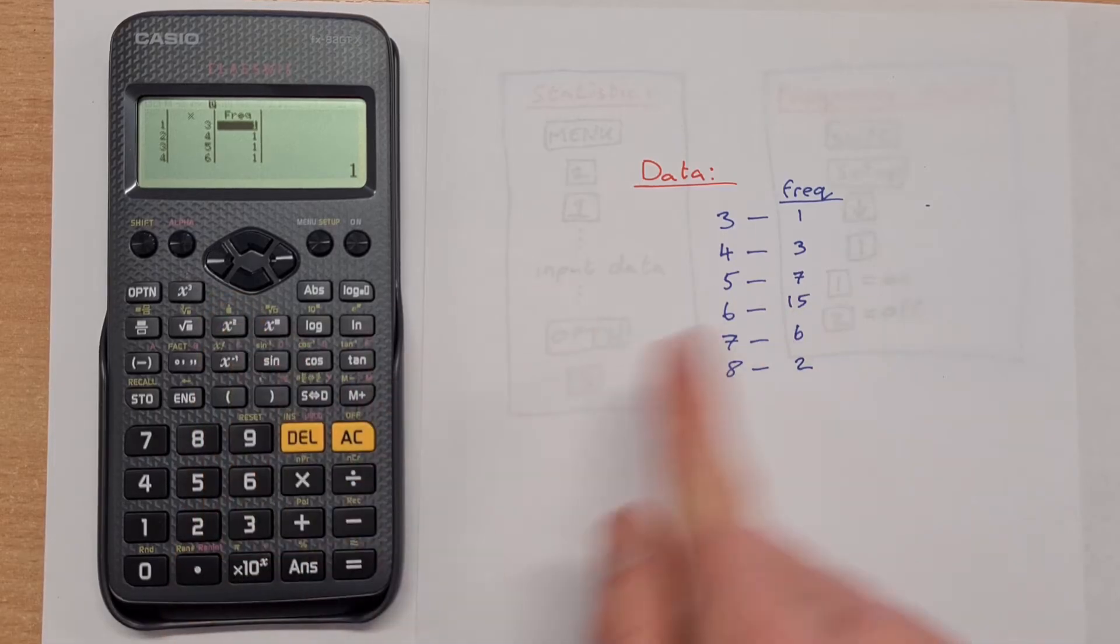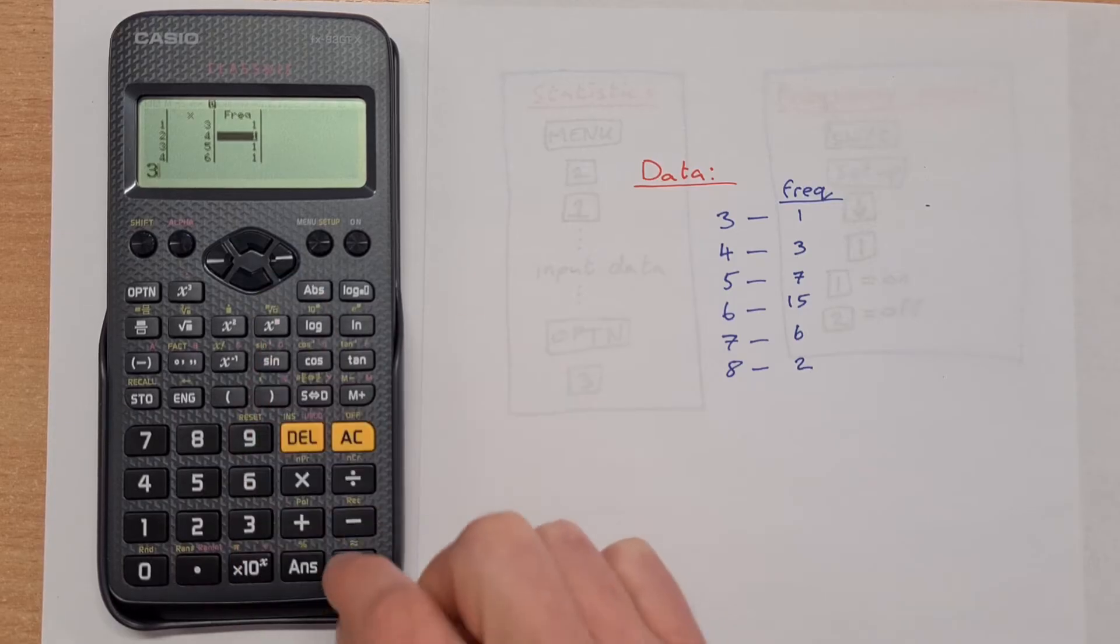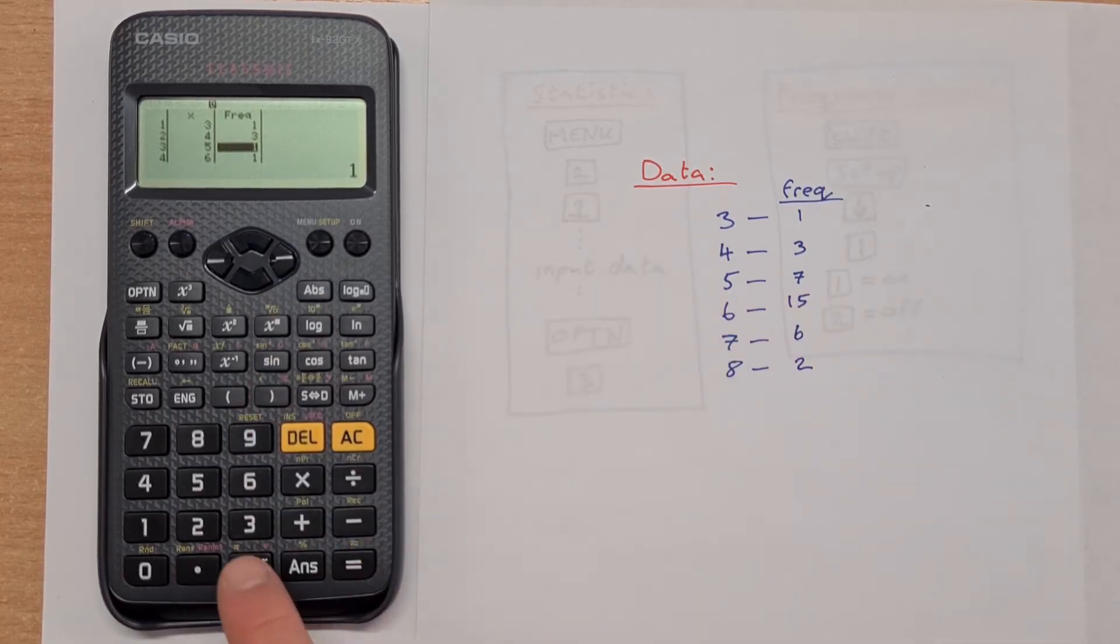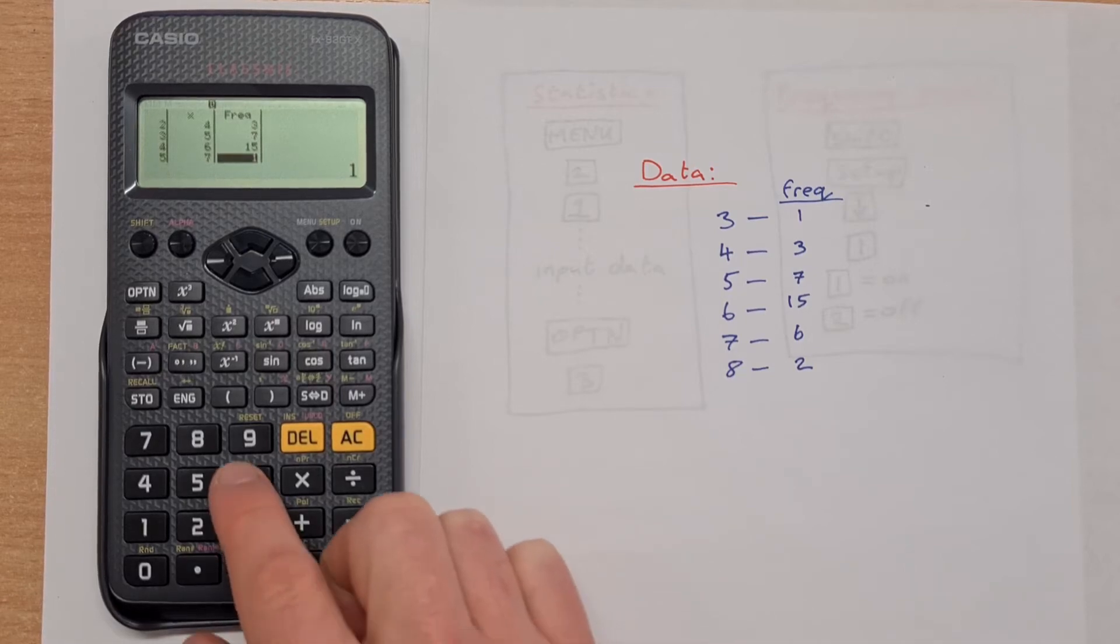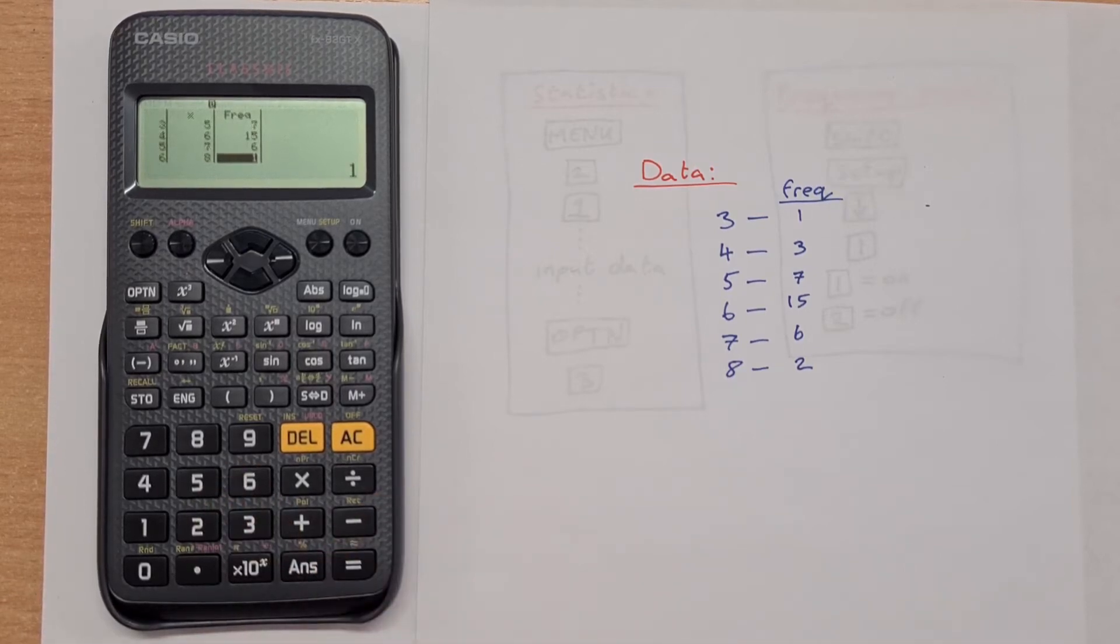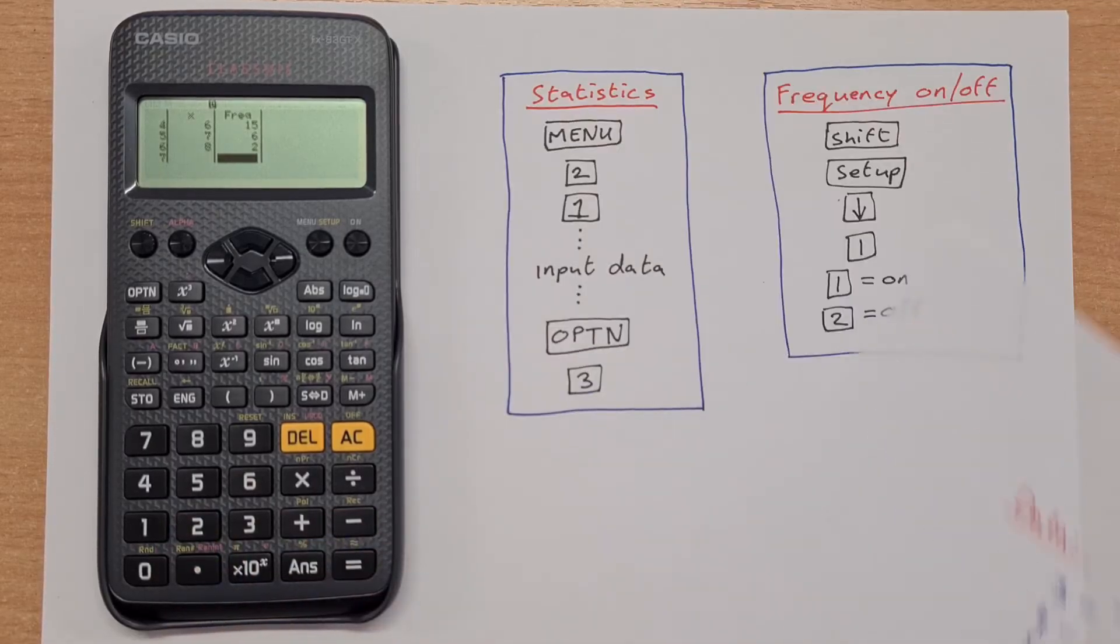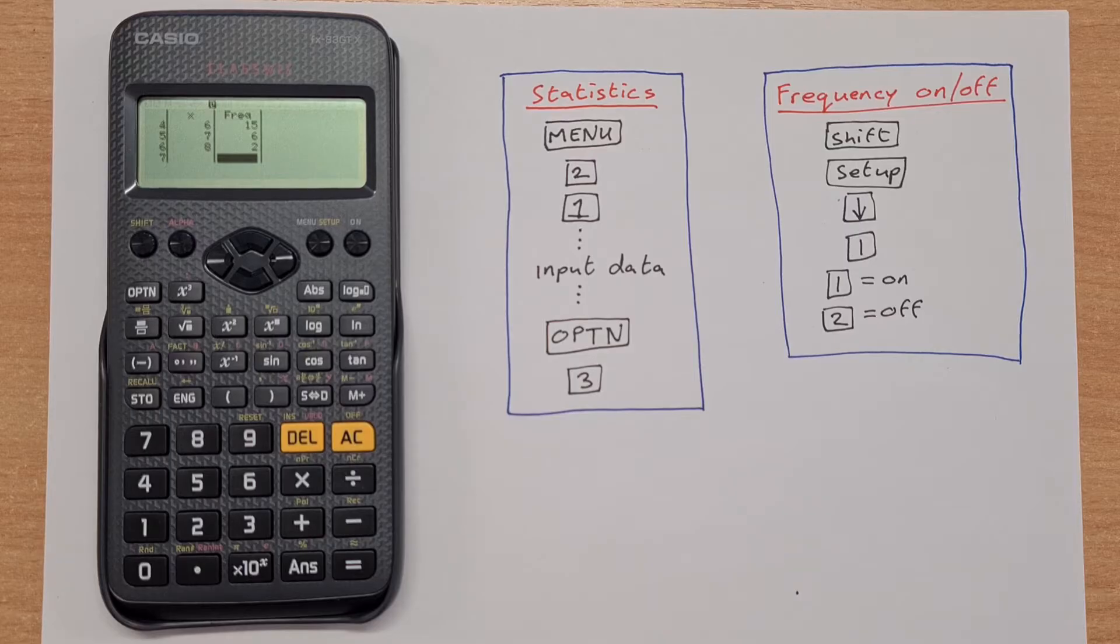So for 3 I have 1, press equals. For 4 I want 3, press equals. For 5 I have 7, press equals. For 6 I have 15, press equals. For 7 I have 6, press equals. And for 8 I have 2, equals. So that's my data input there.